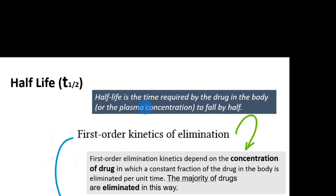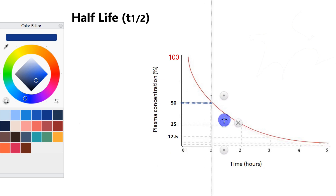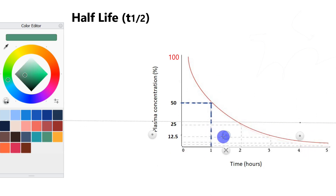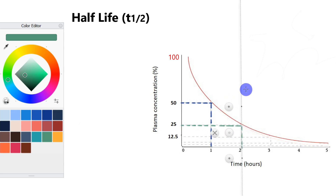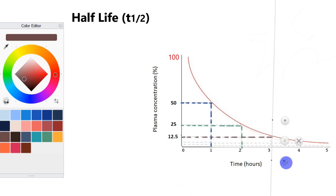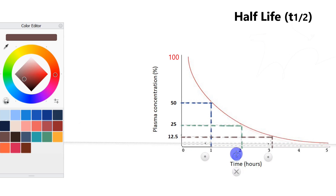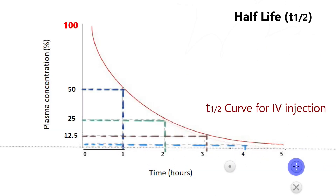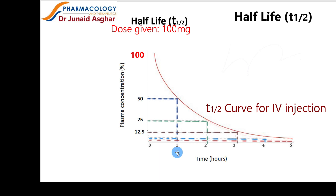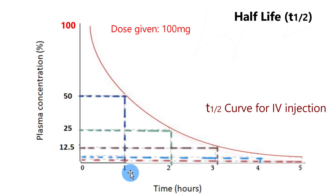Half-life is the time required for the drug concentration in the plasma to fall by half. Let's draw and connect lines on the graph. For example, if the half-life of a drug is one hour and we have given 100 milligrams of the drug, then when the first hour has elapsed...